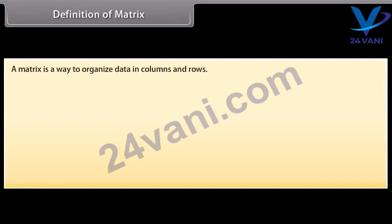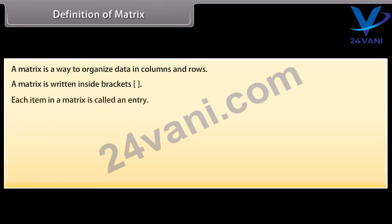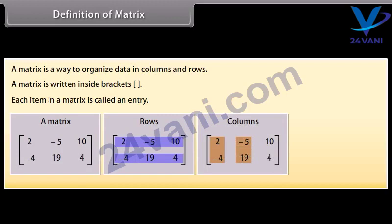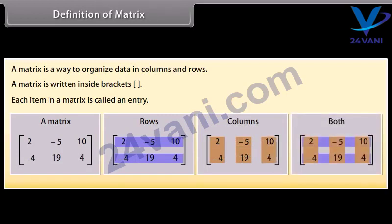Definition of matrix. A matrix is a way to organize data in columns and rows. A matrix is written inside brackets. Each item in a matrix is called an entry. Look at this matrix — it has two rows and three columns. The entries of the matrix below are 2, minus 5, 10, minus 4, 19, 4.